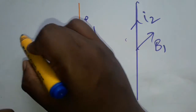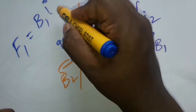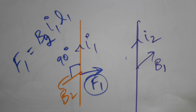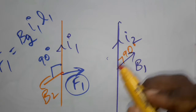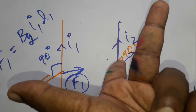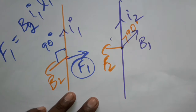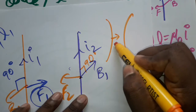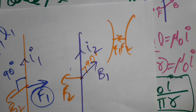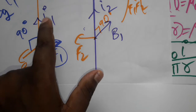F1 is created due to B2, I1, and length L1 of the first wire. F2 is created due to B1, I2, and length L2 of the second wire. So both wires attract each other because both currents are upwards. The magnetic field and current are perpendicular, and according to Fleming's left-hand rule, the force is directed towards the other wire.